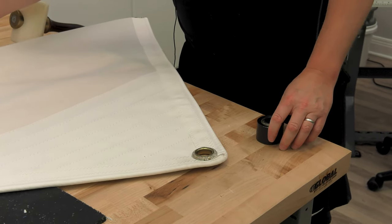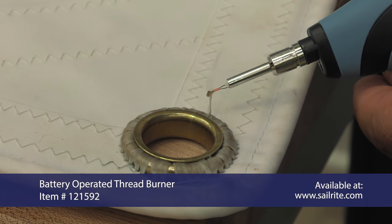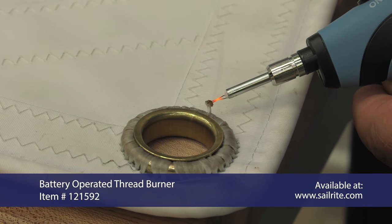Finally, we're going to use the battery operated thread burner to seal the raw ends of our waxed twine, giving our project a beautiful finished look.